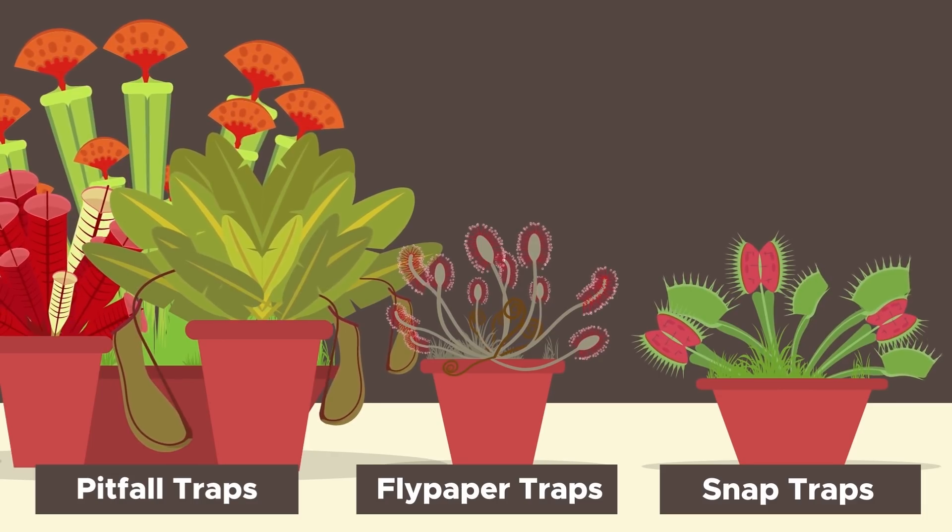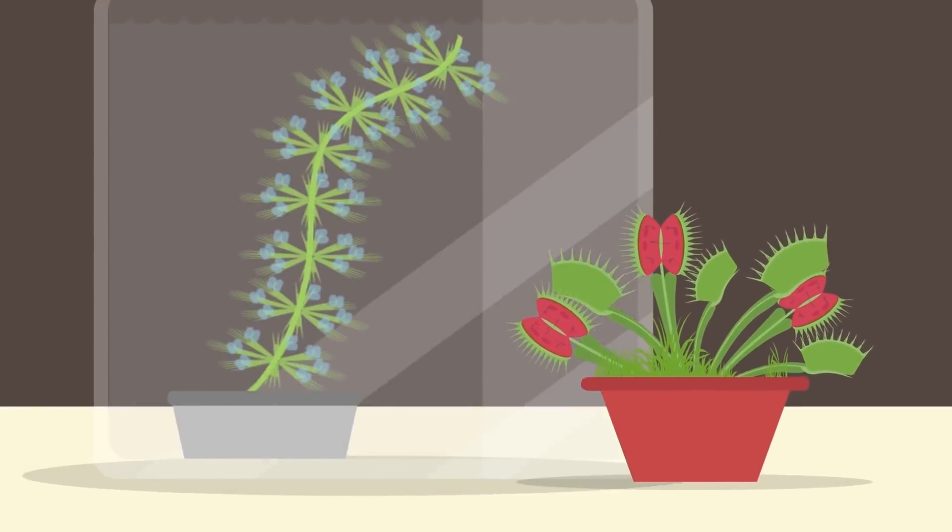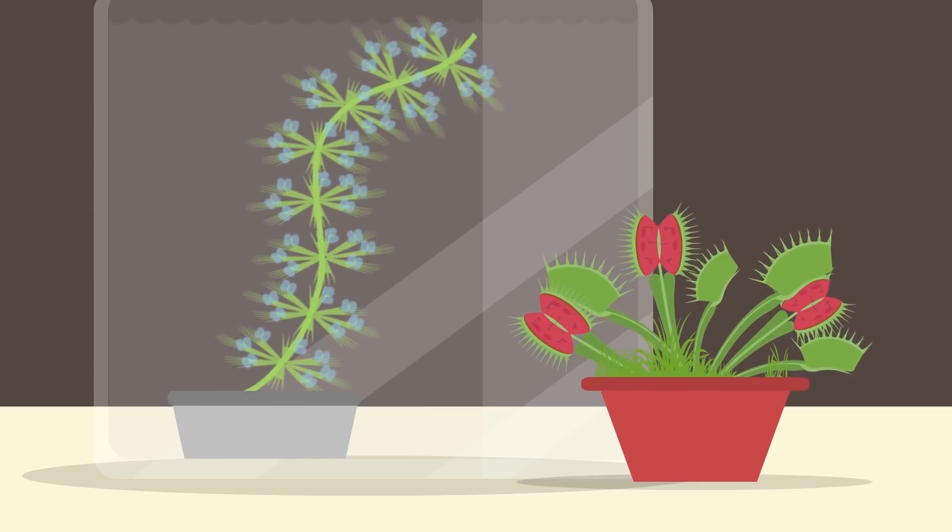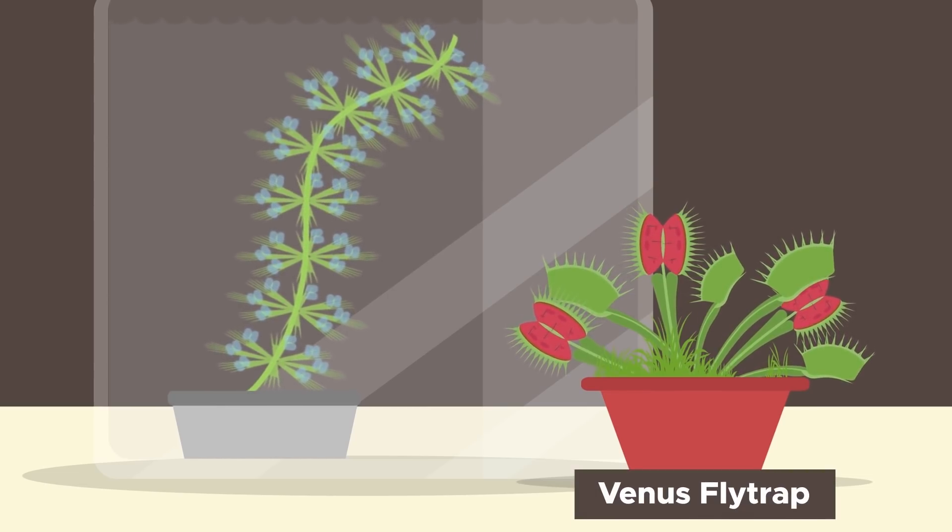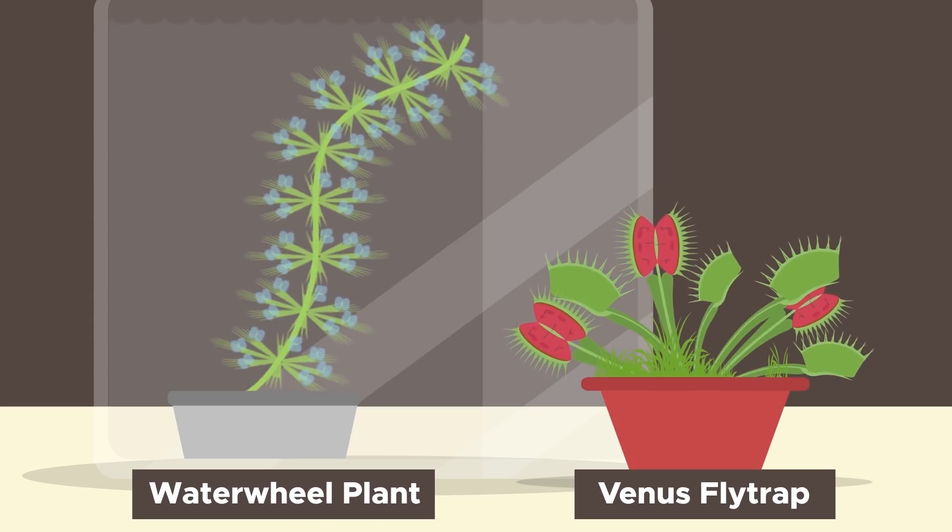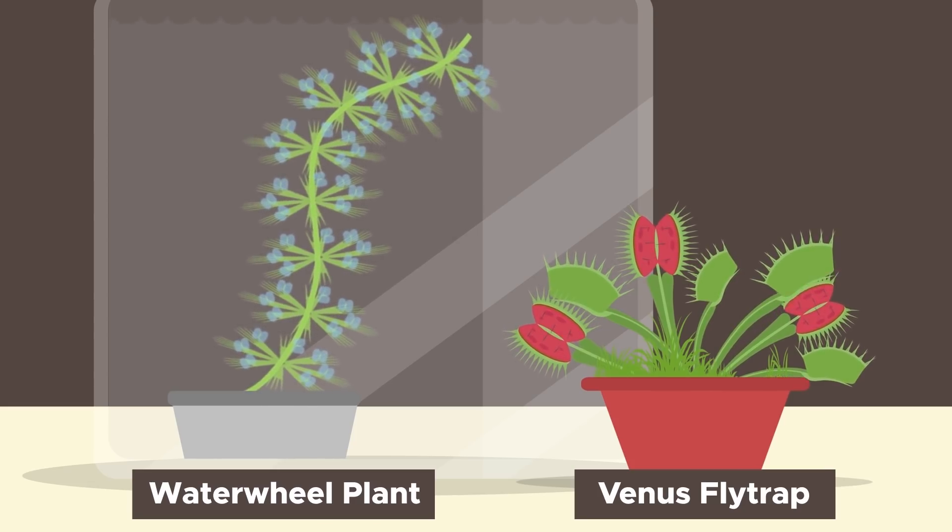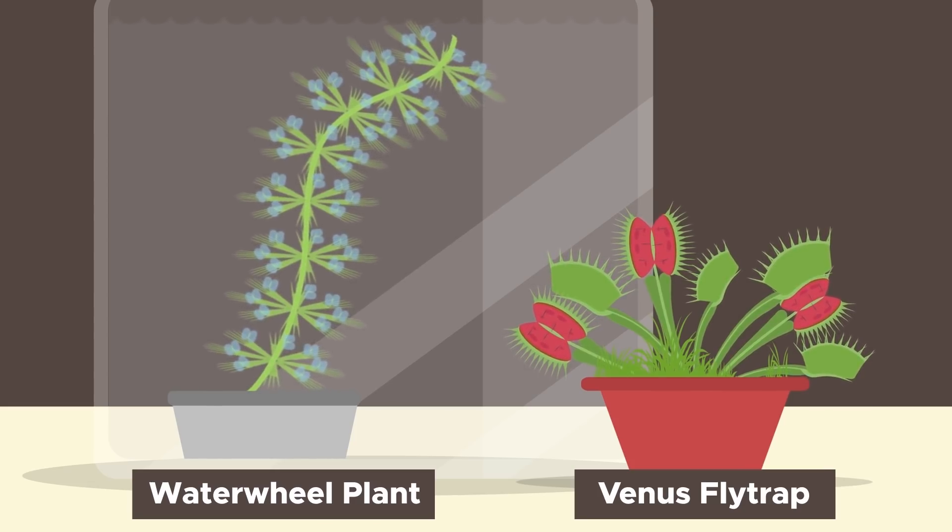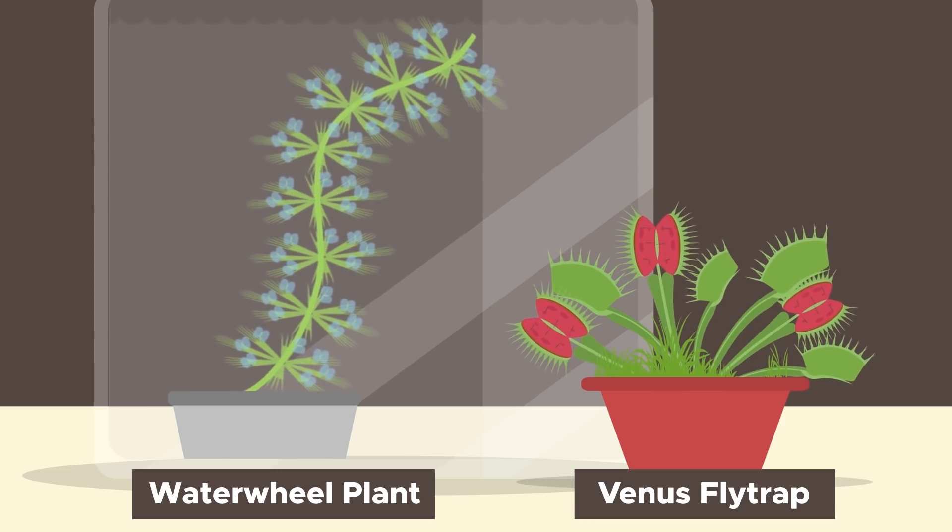Today there are only two species of snap traps. The Venus flytrap and the waterwheel plant, basically a Venus flytrap that grows underwater where it captures small aquatic invertebrates and tiny fish.